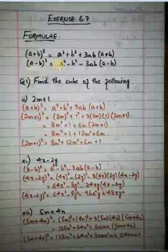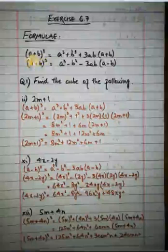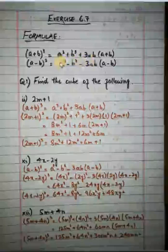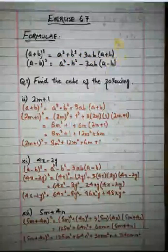Now look at the right hand side: a cube plus b cube plus 3ab into a plus b. The meaning of a plus b whole cube is the multiplication of a plus b three times. When you multiply a plus b three times by the usual method you get the expression on the right hand side, which actually contains four terms: a cube plus b cube plus 3a squared b plus 3ab squared. When you take 3ab common from the last two terms you get 3ab into a plus b. The same procedure is followed in the next formula.